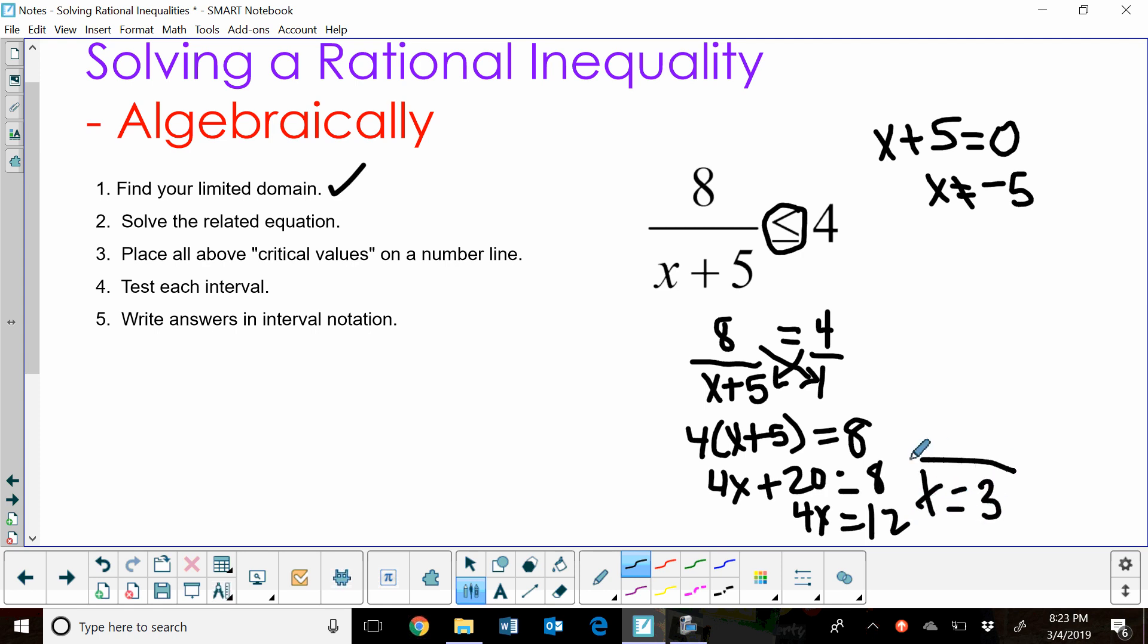So we have our solution to the related equation. We've done step 2. Now what we're going to do is place these values, these critical values. That's what these two answers are called. The negative 5, which is the limited domain, and the solution, are both what we consider critical values. We're going to place them on a number line. Negative 5 is on the left because it's smaller than positive 3.